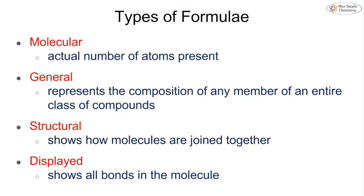There are four different types of formula you need to know. The first is molecular formula, which shows the actual number of atoms. The second is general formula, which represents the composition of an entire class of compounds — like an equation to predict the formula of any member of that group. Third is structural formula, which shows how the molecules are joined together. Fourth is displayed formula, which shows all the bonds in the molecule.